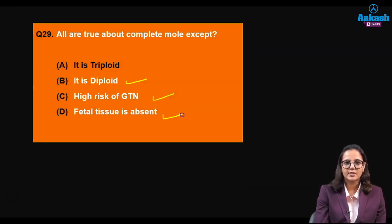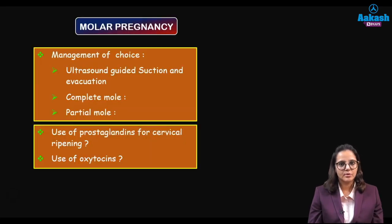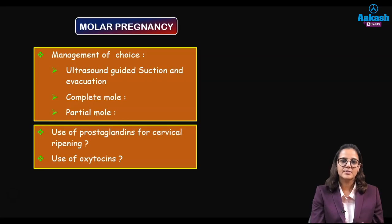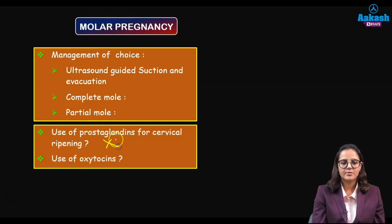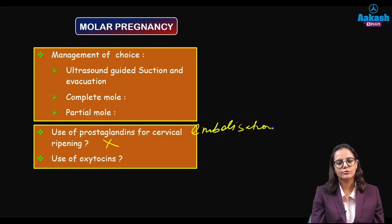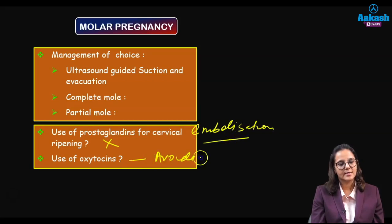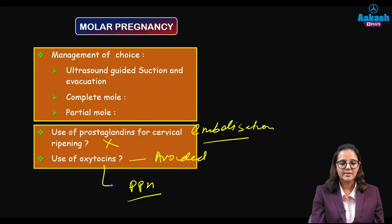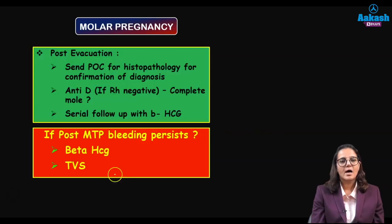Best management for molar pregnancy is ultrasound-guided suction evacuation, because the uterus is extremely vascular and unguided suction can perforate it. Prostaglandins are not recommended for cervical ripening because they can cause embolization of trophoblastic cells and are therefore contraindicated. Oxytocin is generally avoided but can be given if the patient has postpartum hemorrhage after evacuation.